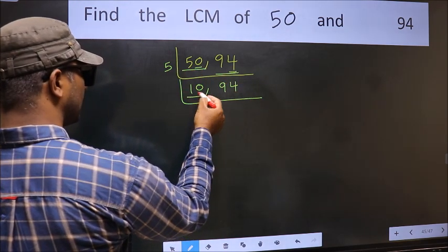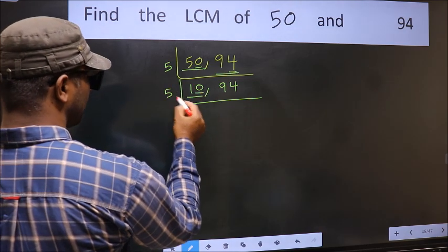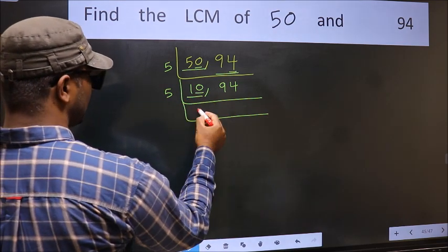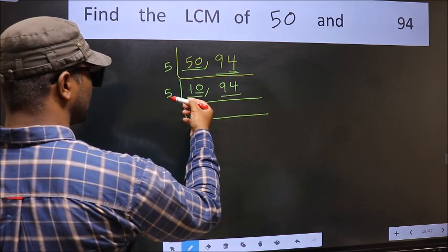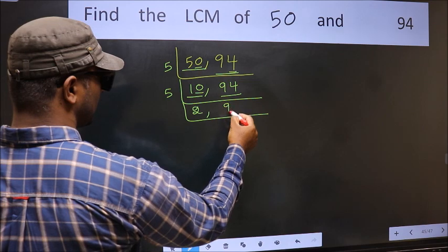Now here we have 10, last digit 0 so take 5. When do we get 10 in 5 table? 5×2 is 10. The other number 94, not divisible by 5 so we write it down as it is.